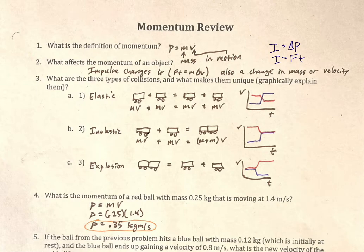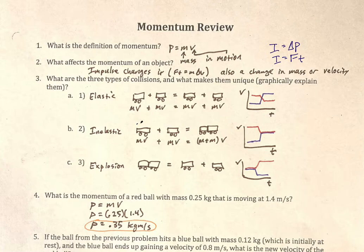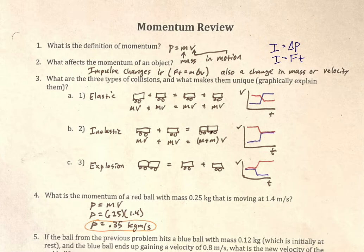Inelastic collisions and explosions are basically the reverse of one another. In inelastic collisions, you have masses going at different velocities — they could be going the same direction or head-on — and in the end they collide and stick together. For example, in a bad car accident, two cars can become entangled and skid as if they were one object — that's an inelastic collision.